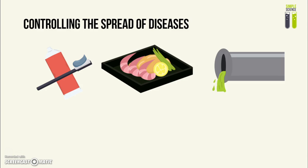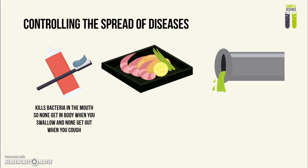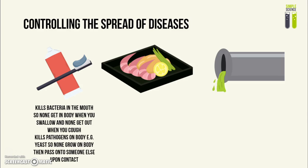Moving on to controlling diseases from spreading. Firstly, you need to keep your body hygienic. For example, when you brush your teeth as part of personal hygiene, you are killing bacteria in the mouth so they don't enter your body, and you don't accidentally spread anything when you cough. You're also stopping pathogens from growing on your body — for example, athlete's foot. When you prevent things from growing on your body, when you come into contact with another person, that person won't get infected either.